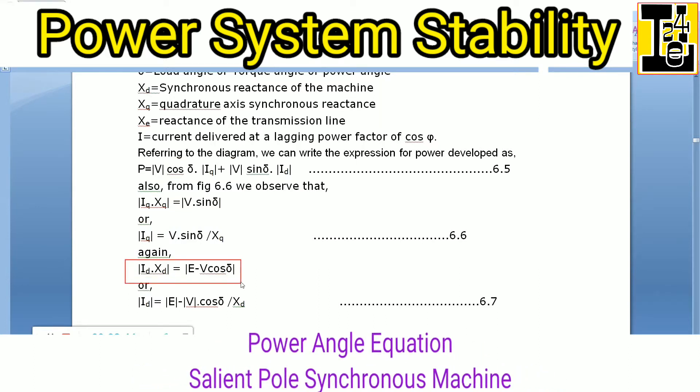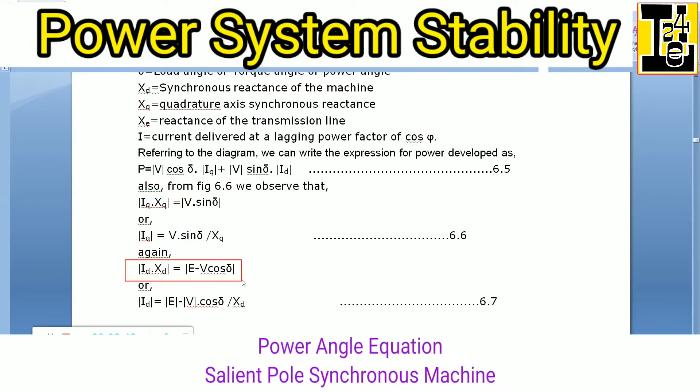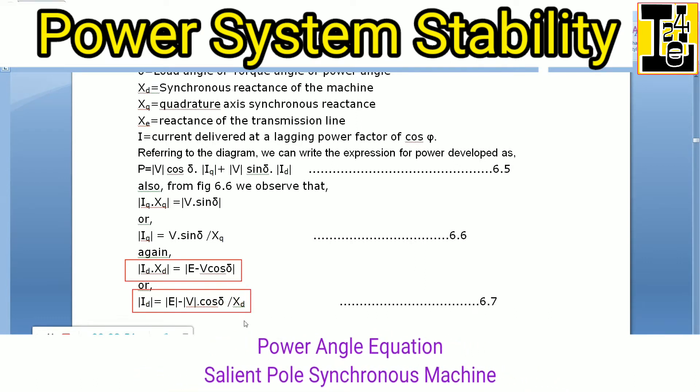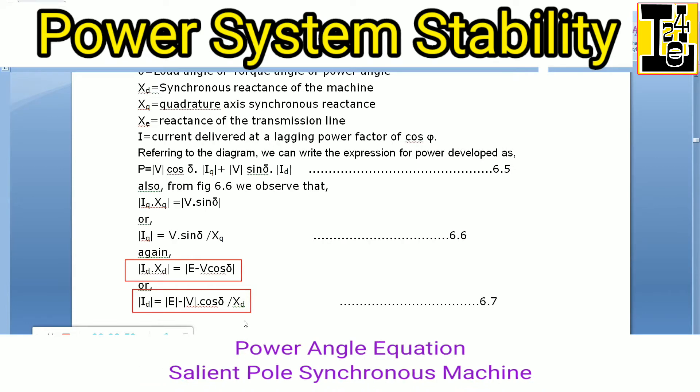Again, we can also write IdXd as E minus V cos δ. Id is further expressed as (E - V cos δ) divided by Xd.